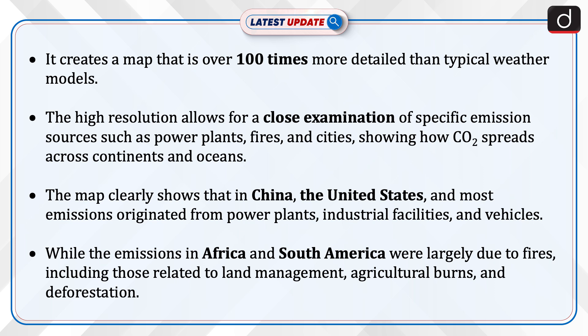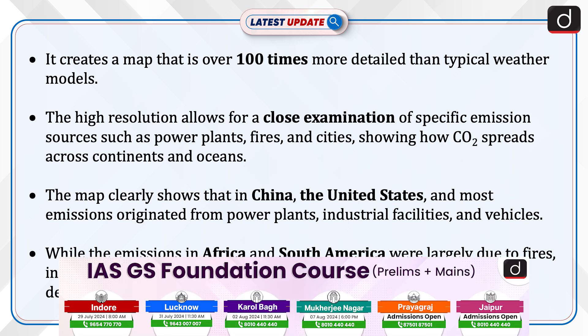The high resolution allows for a close examination of specific emission sources, such as power plants, fires, and cities, showing how carbon dioxide spreads across continents and oceans. The map clearly shows that in China, the United States, and most emissions originated from power plants, industrial facilities, and vehicles. While the emissions in Africa and South America were largely due to fires, including those related to land management, agricultural burns, and deforestation.